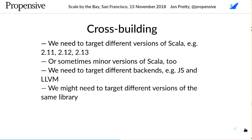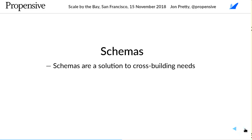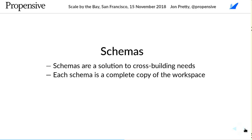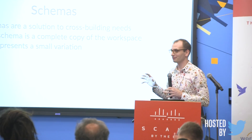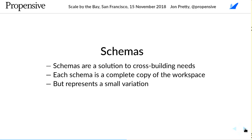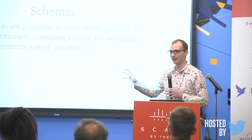There are also libraries which offer integration with either Cats or Scalaz, publishing two different versions — normally with underscore-cats or underscore-scalaz. I propose schemas as a way of supporting all of these variations. A schema is actually a complete copy of the entire workspace — all the projects, all the modules, all the definitions in that ADT. Each schema is a complete copy but with some variations: a different compiler, a different commit hash of a source repository, an additional source directory, or a whole new project.